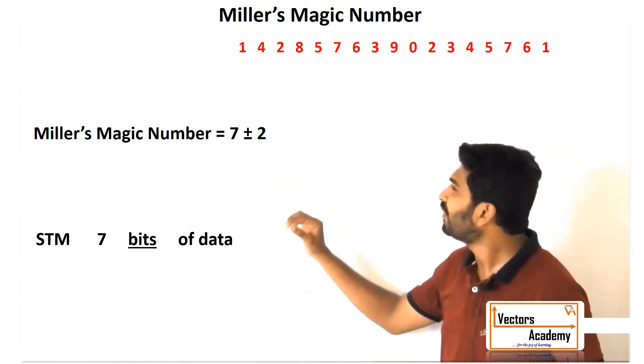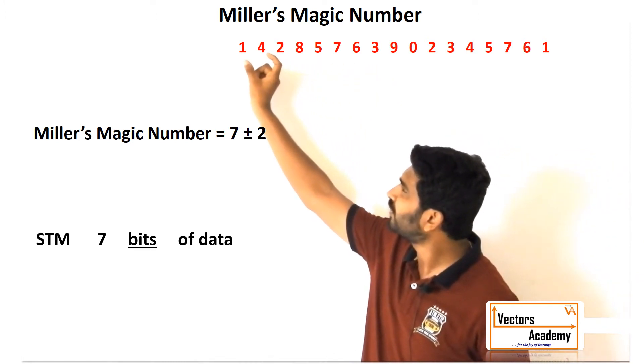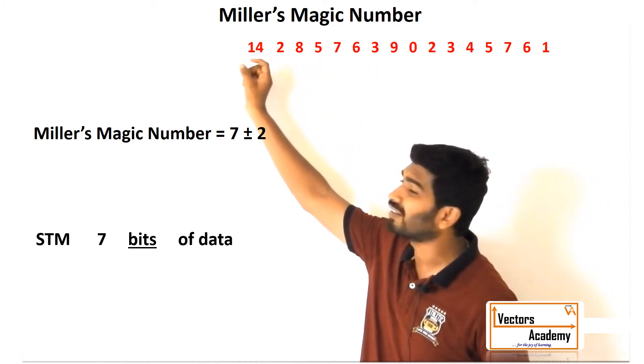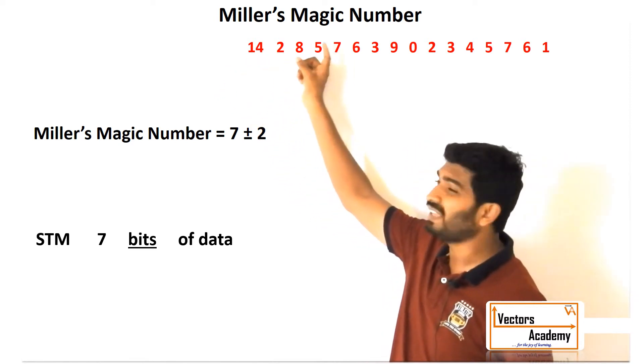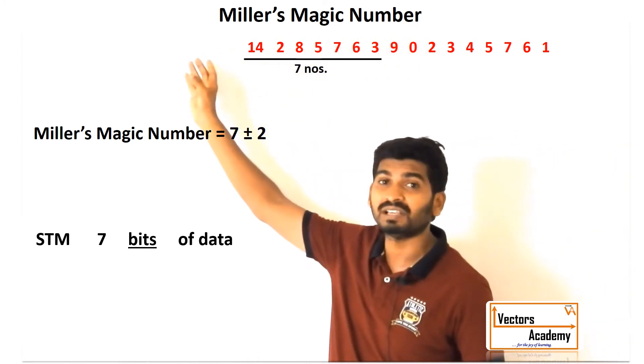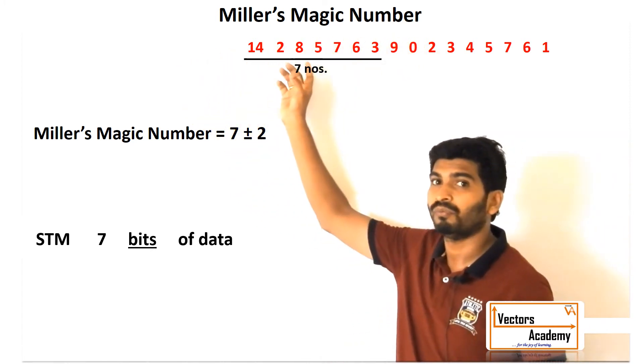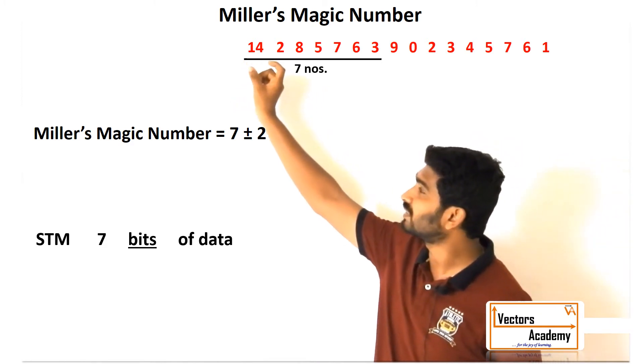If I look at these numbers and combine the first two numbers, that will make it 14—that becomes a single number. Now if I count: one, two, three, four, five, six, seven. I'll remember seven numbers, but one of them is 14, which contains two numbers. This is called a chunk of data.